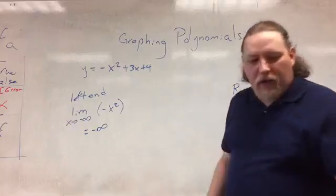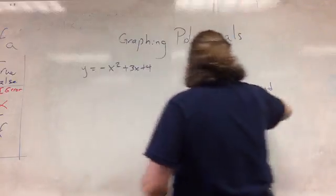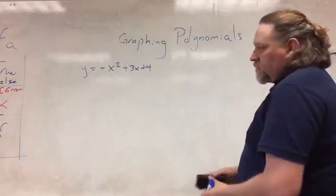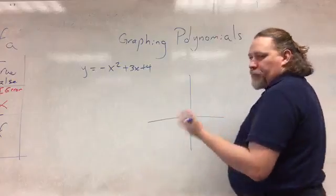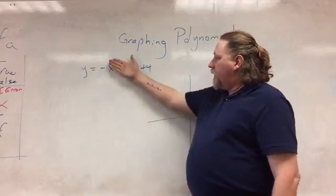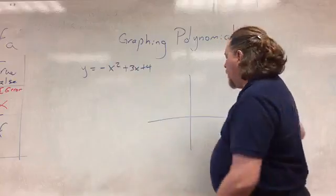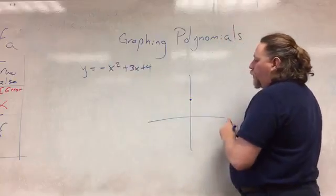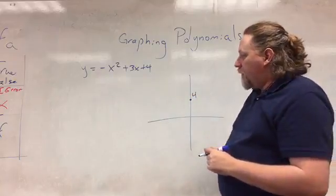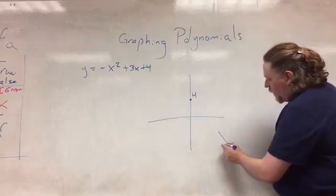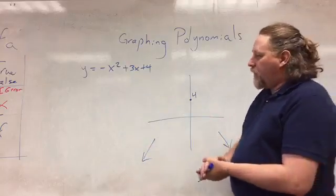Now we're going to go after the middle. First, the y-intercept — you just need the constant. The constant is 4, so right here at y equals 4 is our y-intercept. We know the graph heads down on the right and down on the left. Now we need to look for x-intercepts, so I'm going to set this equation equal to 0.